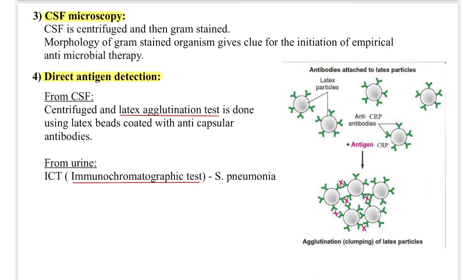Direct antigen detection: CSF is centrifuged and a latex agglutination test is performed using latex beads coated with anti-capsular antibodies. The latex beads are coated with anti-capsular antibodies against the antigens suspected in the CSF. If the antigen and antibody agglutinate, the test is positive, confirming the suspected organism is present in the CSF.